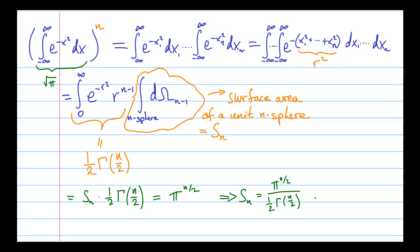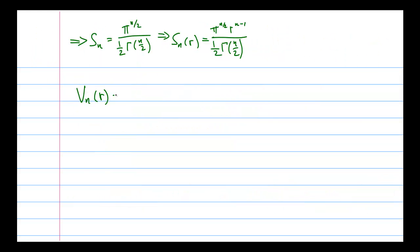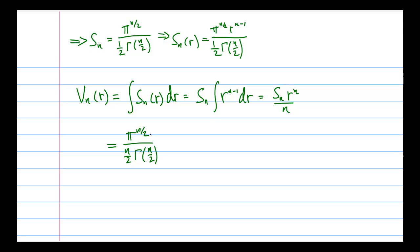Now, this expression gives the surface area of a unit n-sphere. To get the surface area of an n-sphere of radius r, we just take this expression and multiply it by r to the n minus 1. And to compute the volume of such a sphere, we just integrate this surface area with respect to r, and we get π to the power of n over 2, divided by n over 2 times the gamma function of n over 2, which we can simplify using properties of the gamma function.